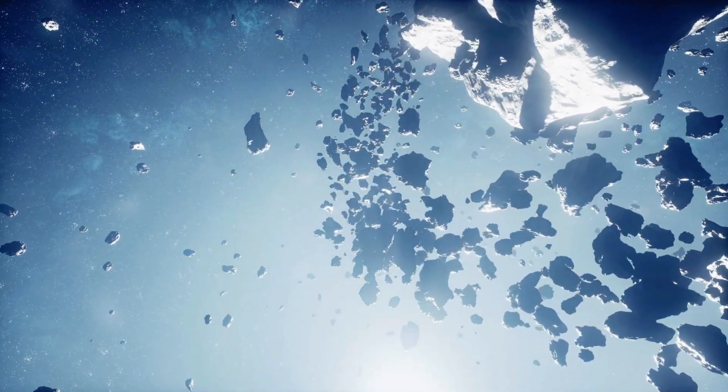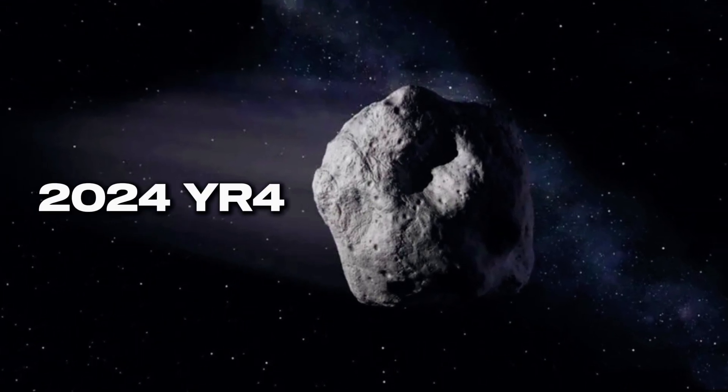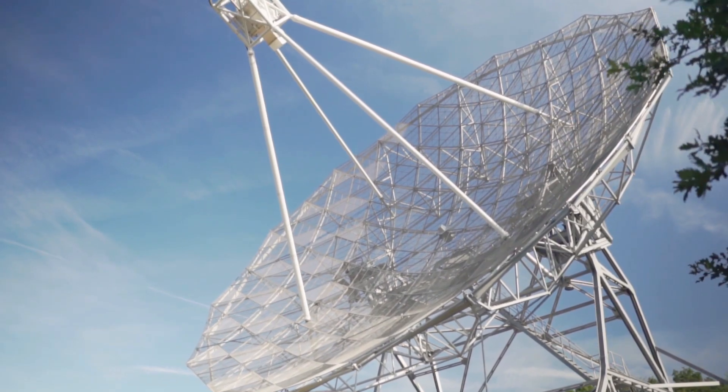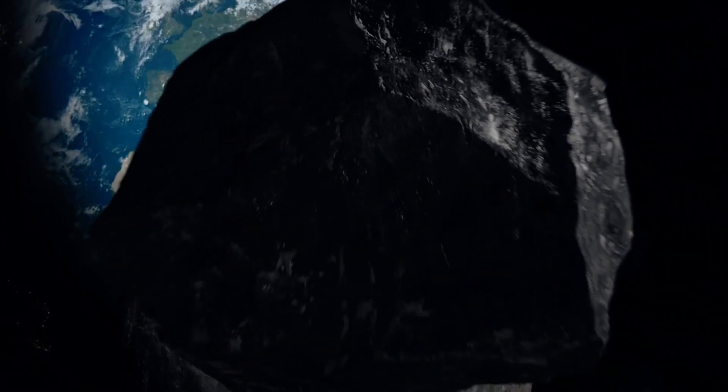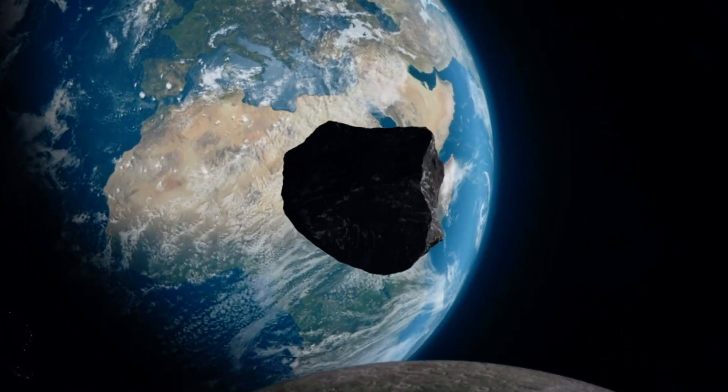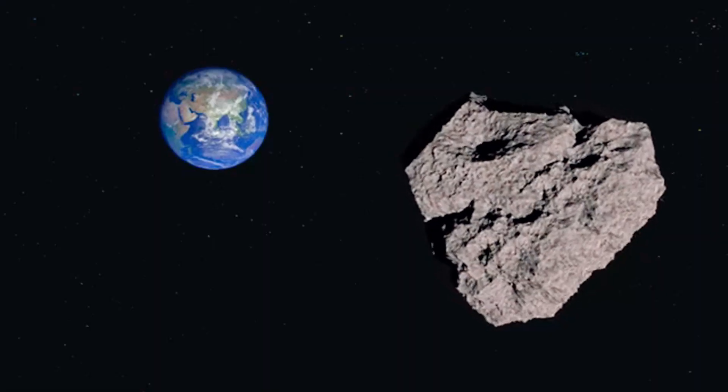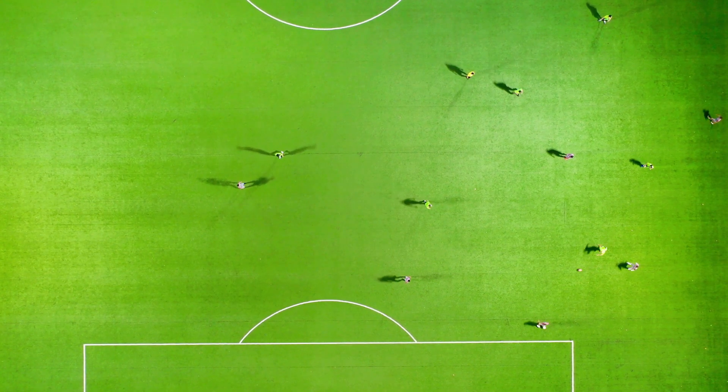In the vastness of space, a newly discovered asteroid is hurtling toward our part of the solar system. Scientists call it 2024 YR4, and what makes it terrifying is its uncertain trajectory. Detected in early 2024 by the Chilean ATLAS telescope, this fast-moving asteroid will come dangerously close to Earth by 2032. Its exact size remains uncertain, but estimates suggest it could be anywhere from 50 to 100 meters wide, about the size of a football field.